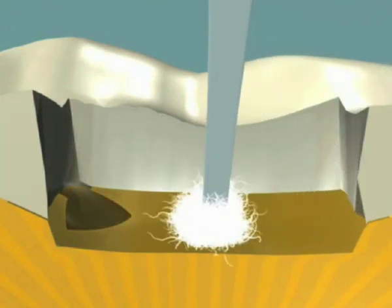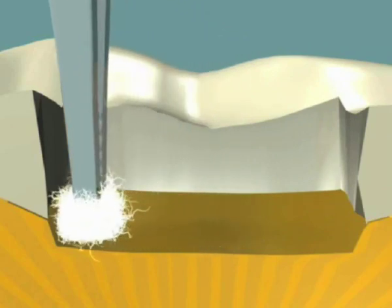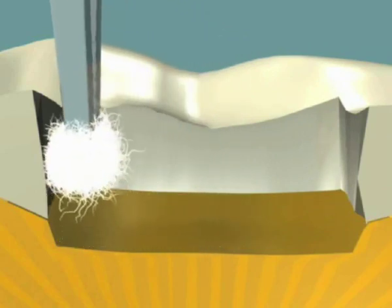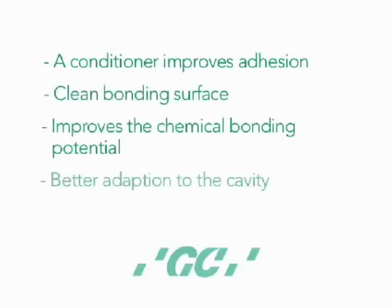Using a conditioner improves adhesion in three ways. It creates a clean bonding surface. It improves the chemical bonding potential of the glass ionomer cement, and it alters the surface energy of the tooth so that the cement can wet and adapt the cavity more effectively.